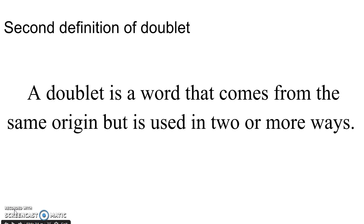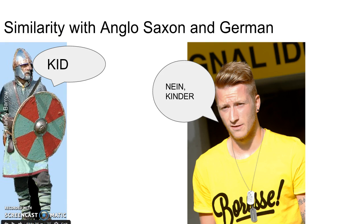Doublets include two things. One definition of a doublet is a pair of words that have origins from different languages but mean the same thing. The word for giving someone assistance is 'help' from Anglo-Saxon and 'aid' from French. The relationship to the current German word is seen in 'hilft.' Another example is the word for young humans: Old English gave the word 'kids' while French gave the word 'children,' and in current German the word for child is 'kinder.'